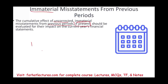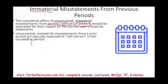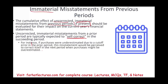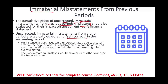The good thing is that some mistakes self-correct. Certain uncorrected immaterial misstatements from a prior period are expected to self-correct. For instance, if purchases were underestimated due to a cutoff error in the prior period, this misstatement would correct itself in the next period when purchases might be overestimated. Over a period of two years, it self-corrects. Two immaterial mistakes would balance out each other over a two-year period. At the end, we're going to look at a schedule of likely misstatements that are uncorrected.